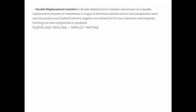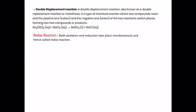The next type, similar to displacement but different, is double displacement reaction. In this reaction, mutual exchange of ions takes place between two compounds. For example, Sodium exchanges with Chlorine and Barium exchanges with Sulfate — positive and negative charges exchange mutually. There is no requirement of reactivity series in double displacement reaction.